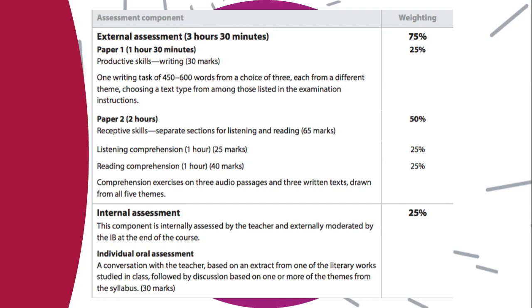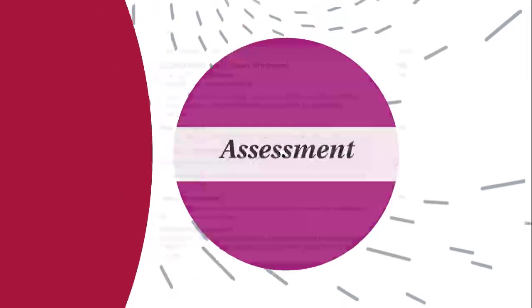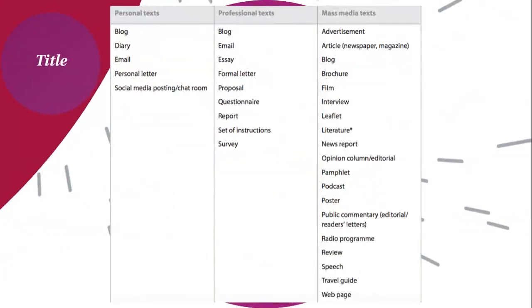Paper 2 works on your receptive skills — there's a listening comprehension section and a reading comprehension section. Comprehension exercises will be on three audio passages and three written texts drawn from all five themes. You'll also be taking part in an oral, which is very important. It's similar to what you see in English A, because it works on your skills to come up with analysis, show how proficient you are in speaking English, extend your thought, engage in discussions, and present what you've learned across the course.